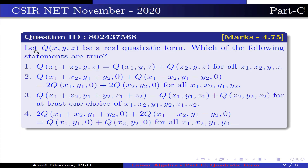The question is: let Q be a real quadratic form. Which of the following statements are true? Option 1: Q(x1+x2, y, z) is equal to Q(x1, y, z) plus Q(x2, y, z) for all x1, x2, y, z.